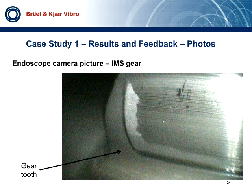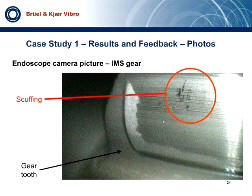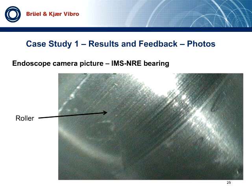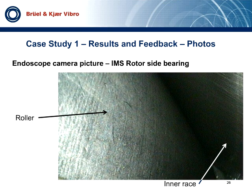As mentioned earlier, the meshing gears are affected as a result of misalignment. Scuffing and hard-end contact marks can be seen on the active flanks of the teeth. The generator side bearing has damage on the outer ring, and we see damage on the rollers. The IMS rotor side bearing surface has been discolored gray, probably caused by worn metal from the gearbox housing.